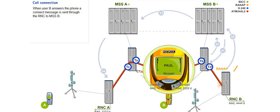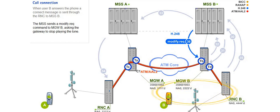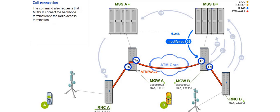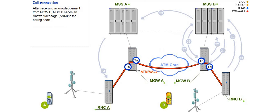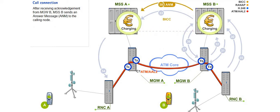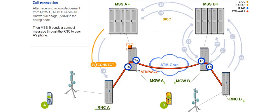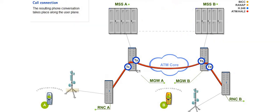When user B answers the phone, a connect message is sent through the RNC to MSSB. The MSS sends a modify request command to MGWB asking the gateway to stop playing the tone. The command also requests that MGWB connect the backbone termination to the radio access termination. The gateway acknowledges the request with a modify response command. After receiving acknowledgement from MGWB, MSSB sends an answer message, or ANM, to the calling node. Then MSSB sends a connect message through the RNC to user A's phone. The resulting phone conversation takes place along the user plane.